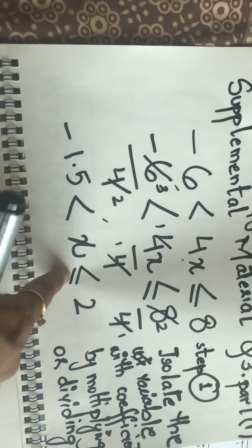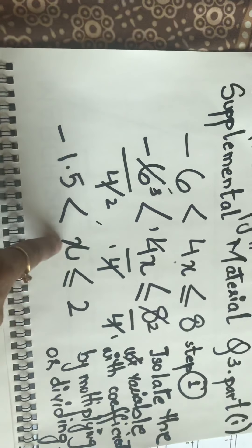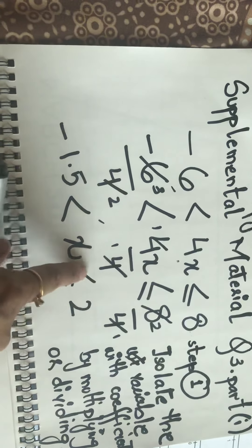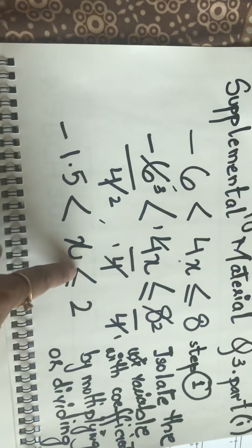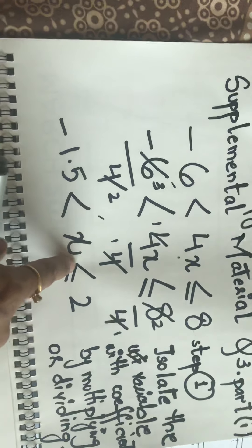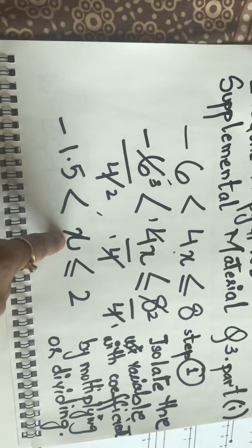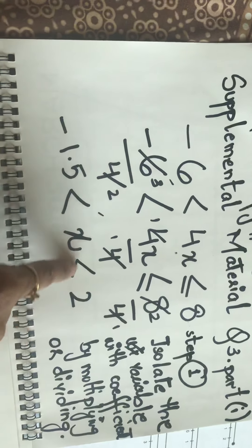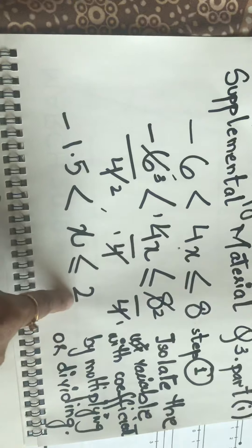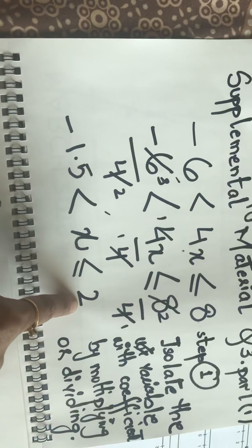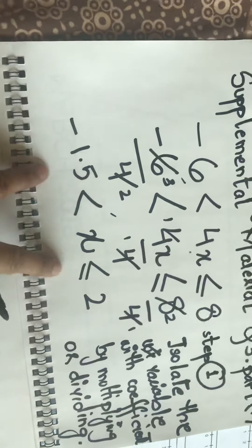X is lesser than or equals to two because we have the sign pointing towards X. So we are obtaining a range of X that includes different numbers.